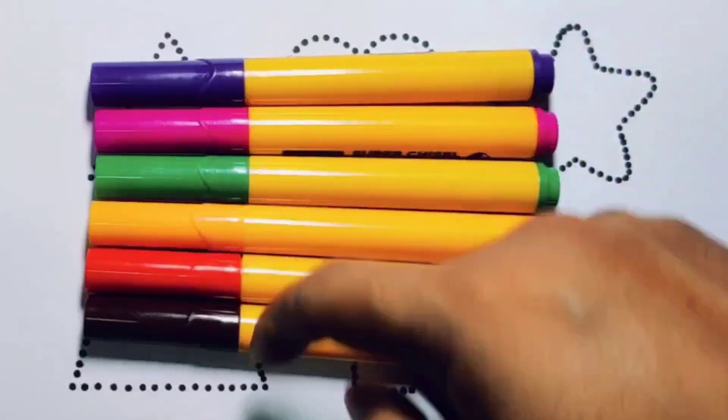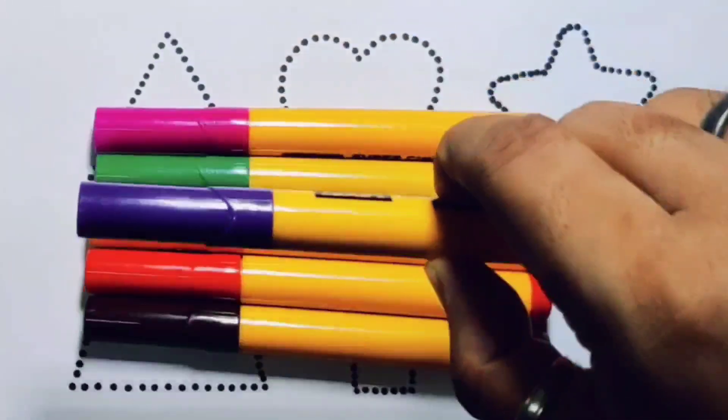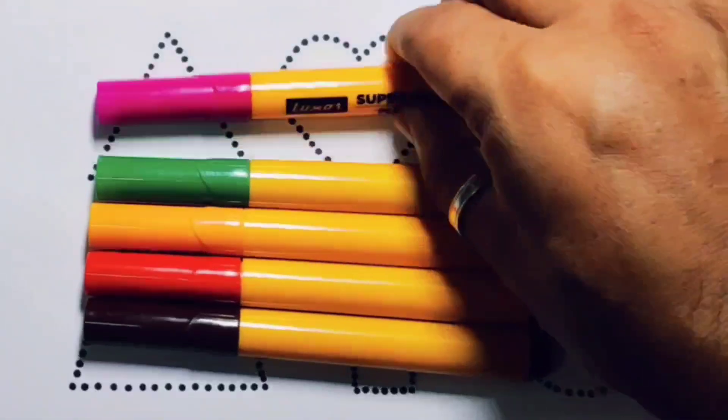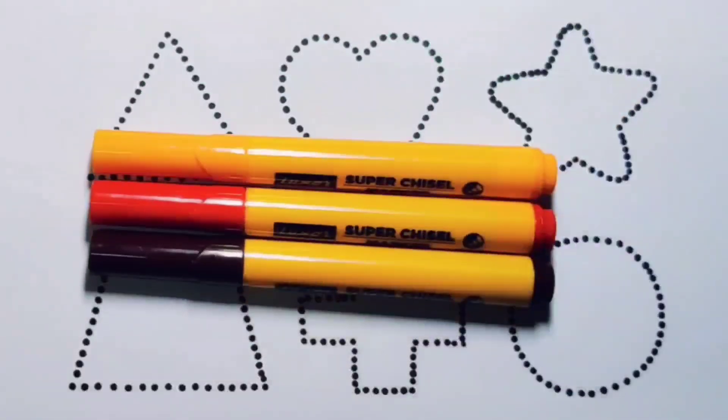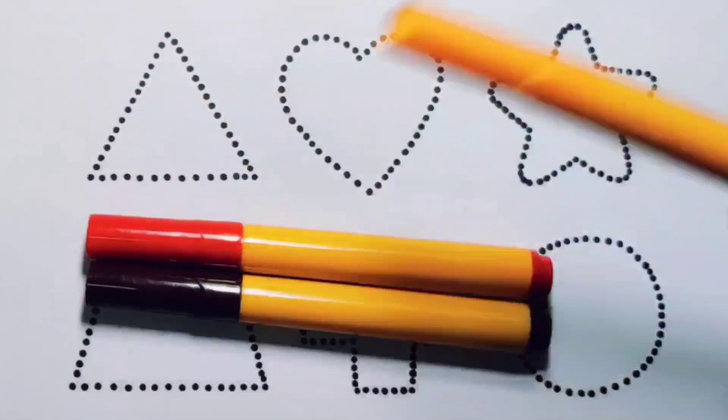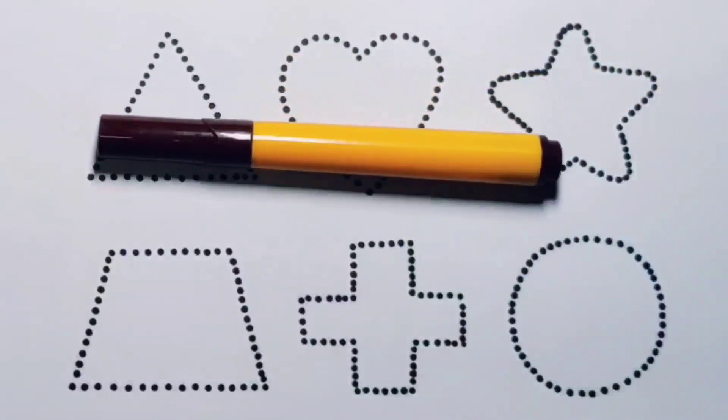First we are going to know the colors name: purple color, pink color, green color, orange color, red color, chocolate color, and black color.